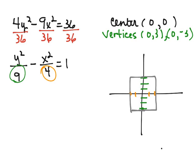And the diagonals of this box will be the asymptotes of our hyperbola. And because the hyperbola has vertices at (0, 3) and (0, -3),